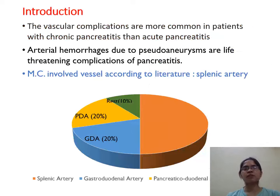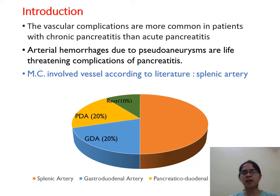Introduction: The vascular complications are more common in patients with chronic pancreatitis than acute pancreatitis. Arterial hemorrhages due to pseudoaneurysms are life-threatening complications of pancreatitis. The most commonly involved vessel according to literature is the splenic artery, followed by the gastroduodenal artery and the pancreaticoduodenal artery.